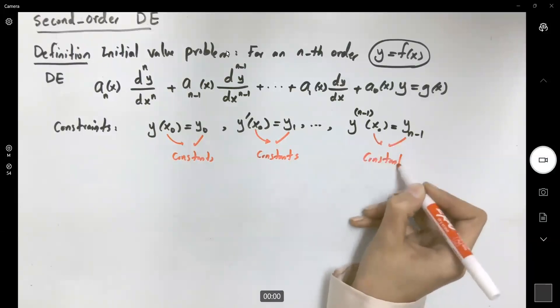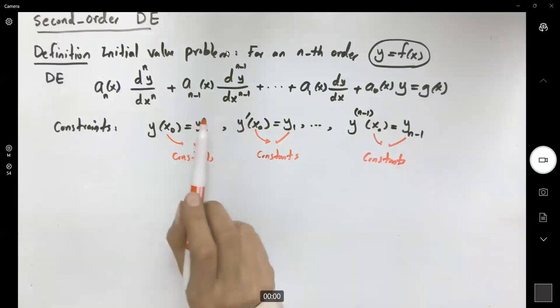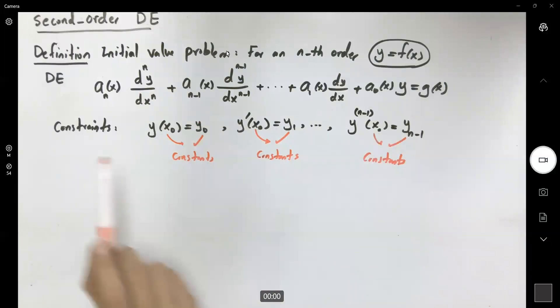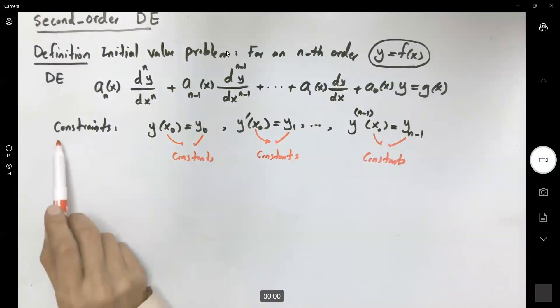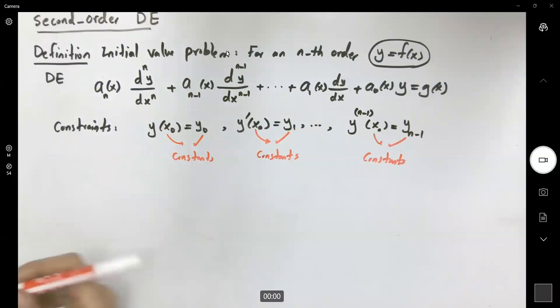When we solve this differential equation, we get a general solution. By using the constraints, we get a particular solution.